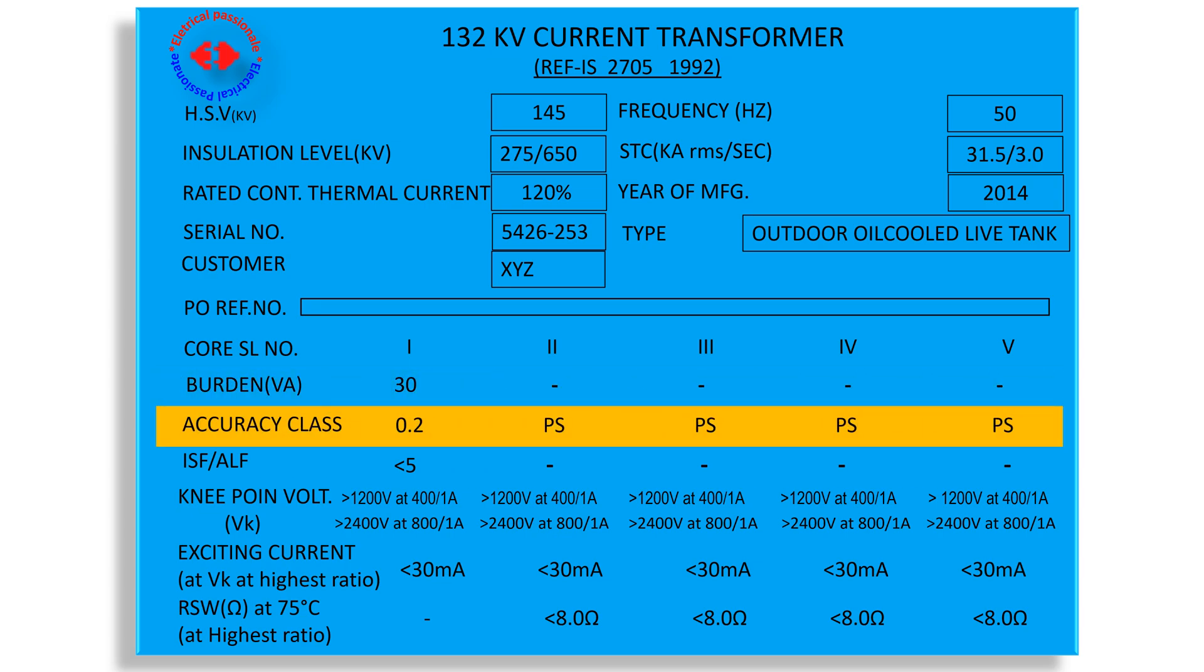Next, we shall discuss about accuracy class of the CT. We require accuracy class for metering circuit and protection circuit. That means protection class. Next, we see accuracy class of other four cores are PS. We have seen PS and PX classes in the nameplate of other CTs that denotes the classes are suitable for differential protection.